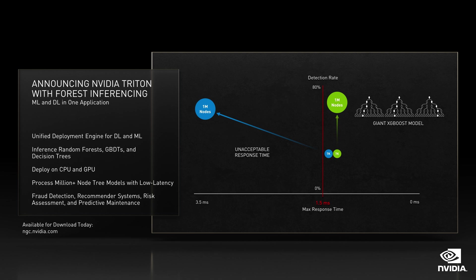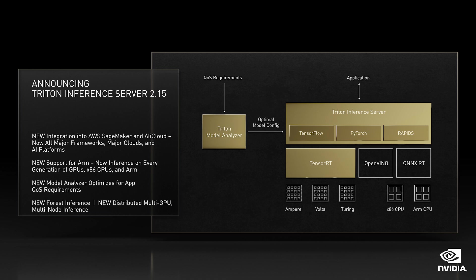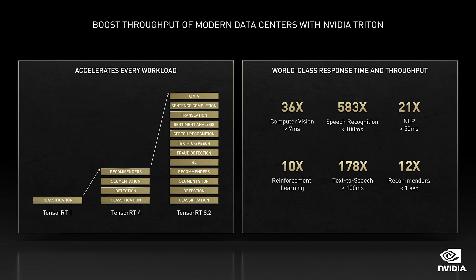Now, with one inference platform, Triton lets you inference DL and ML on GPUs and CPUs. We're announcing a major upgrade to our Triton inference server: inference on all models, any framework, multiple query types, ML and DL for all platforms — cloud, on-prem, edge, and embedded — multi-GPU, multi-node, on CUDA, x86, and ARM. One engine, NVIDIA Triton for all inference workloads. The performance of Triton is spectacular across the board, from imaging to speech AI, natural language processing, recommenders, and reinforcement learning.